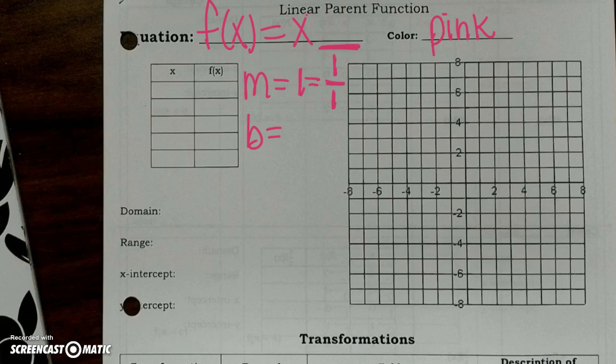Now we have our b-value. We don't have a b-value right here — we have nothing. So where is our intercept going to start? At 0. So let's go ahead and start at 0, then go to our slope: up 1 and to the right 1. We'll also go the opposite way — down 1 and to the left. Go ahead and connect your dots to make your line.